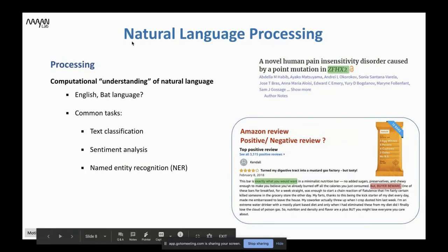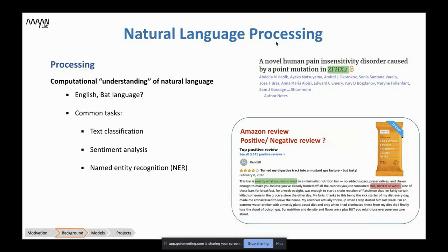So what is natural language processing? It's the computational understanding of natural language — for example, English or bat language, as I presented. We help a computer understand the language that we talk among ourselves, so a computer can read articles very quickly and give us a summary.